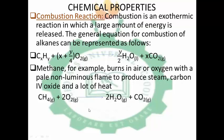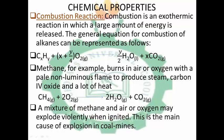A mixture of methane and air or oxygen may explode violently when ignited. This is the main cause of explosions in coal mines. As mentioned previously, methane is known as fire damp in poorly ventilated coal mines. When methane reacts with oxygen or air, it explodes violently. That is why poorly ventilated coal mines face explosions due to the reaction of methane and oxygen.